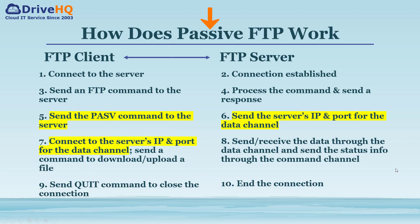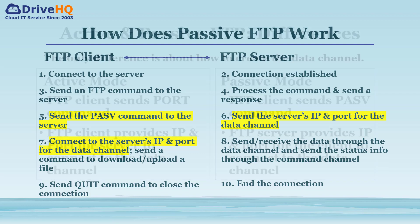In the passive mode, when the client needs to send or receive a file, it sends the PASV command to the server. The server then sends its IP and a random port number to the client. The client connects to the IP and port to establish the data channel.